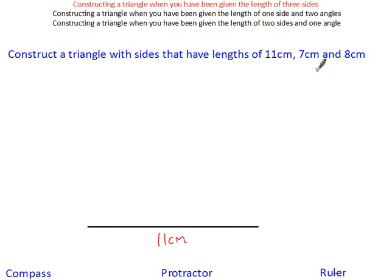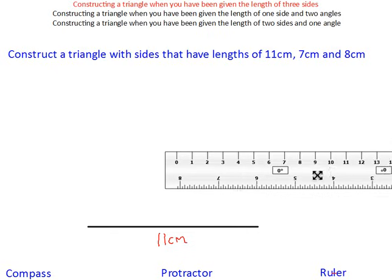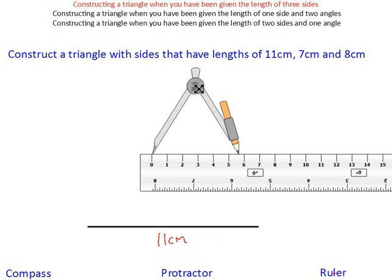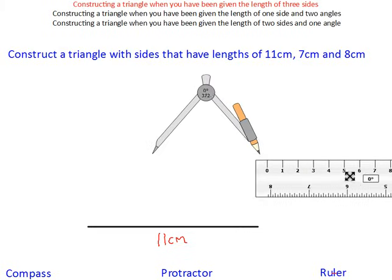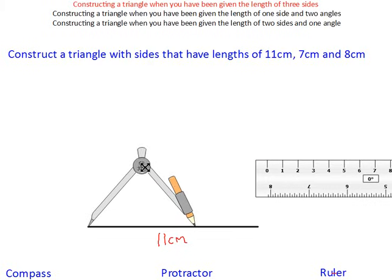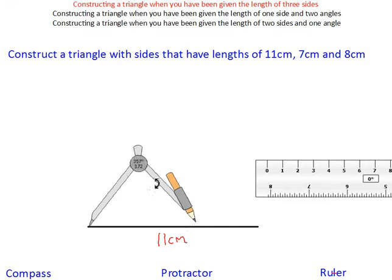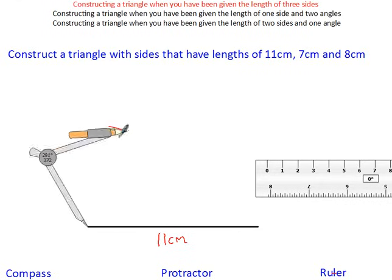Now to get the other two sides, 7 centimeters and 8 centimeters, we're going to use our compass with our ruler. Get your compass, put the needle at zero, and then open your compass to 7 centimeters. Then we're going to draw a big arc from one side of the base above the baseline. Open it up and do a nice arc like that.